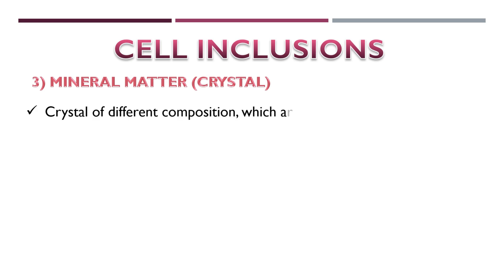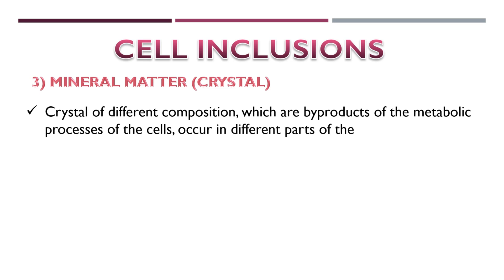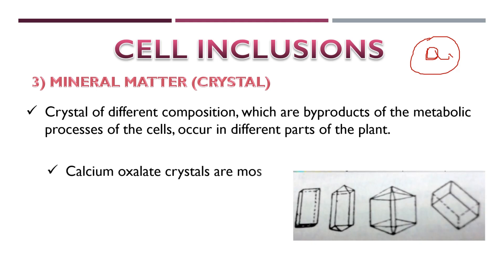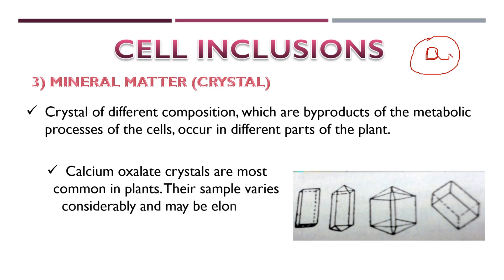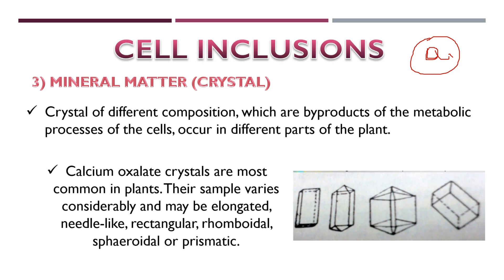Thirdly, mineral matter. These are crystals of different compositions which are byproducts of the metabolic processes of the cells, occurring in different parts of the plant. These crystals come in different shapes such as elongate, needle-shaped, rectangular, rhomboid, and others. In plants, calcium oxalate crystals are the most common.